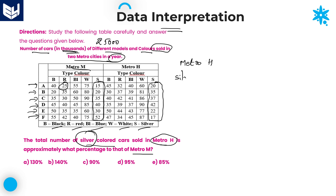Metro H silver total: I am adding all these values. 5 plus 7 is 12, plus 14, 16, and 23. Units place 3. Then 2 plus 1 is 3, 5, 9, 12, 15, 17. Total is 173. Total silver color cars in Metro H is 173.